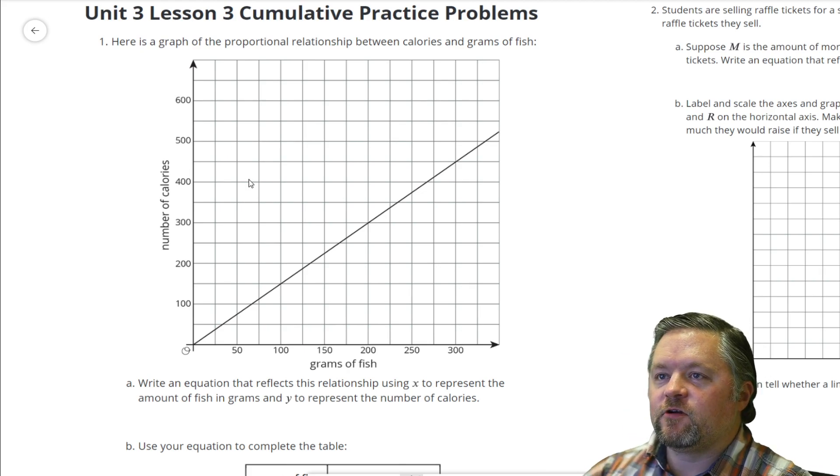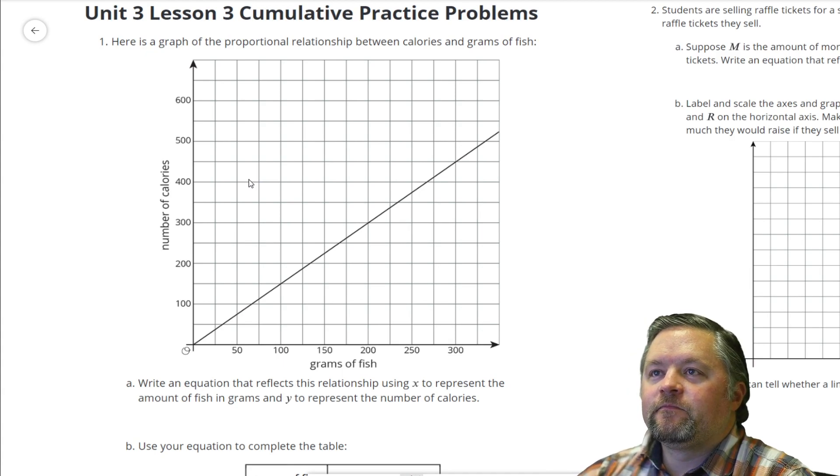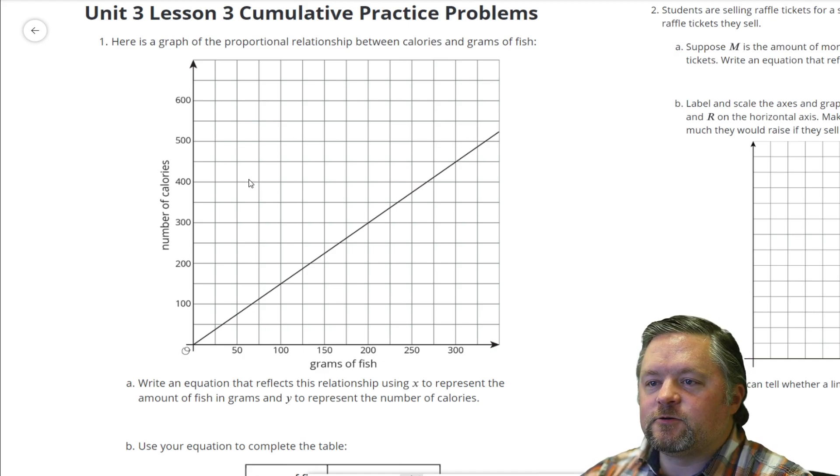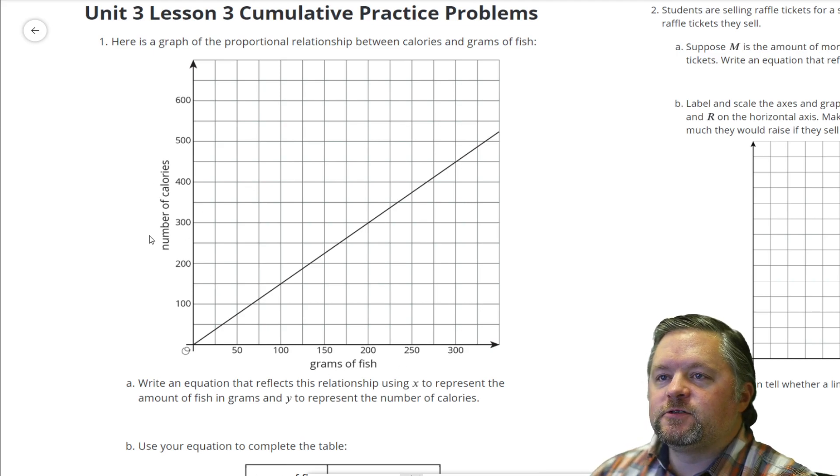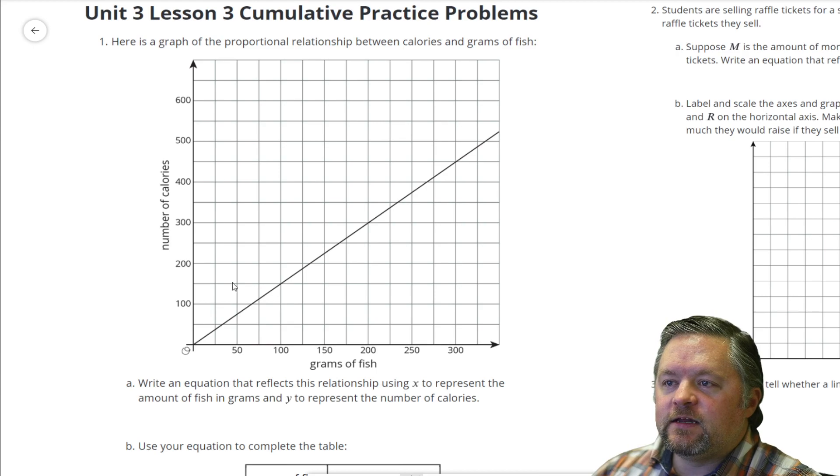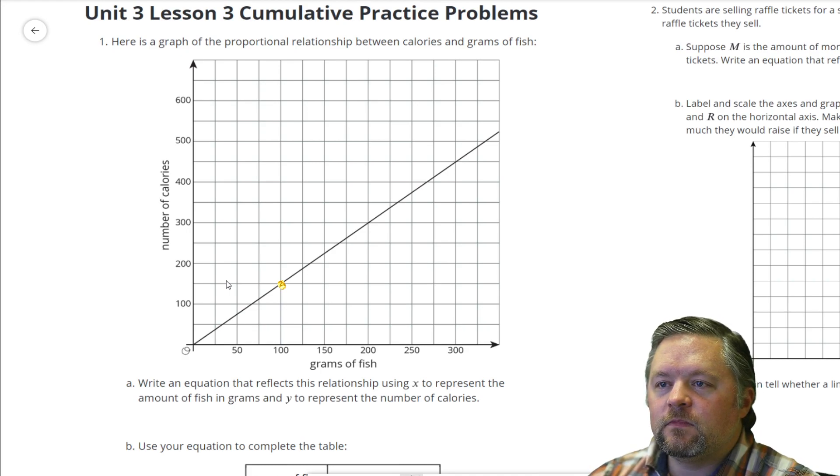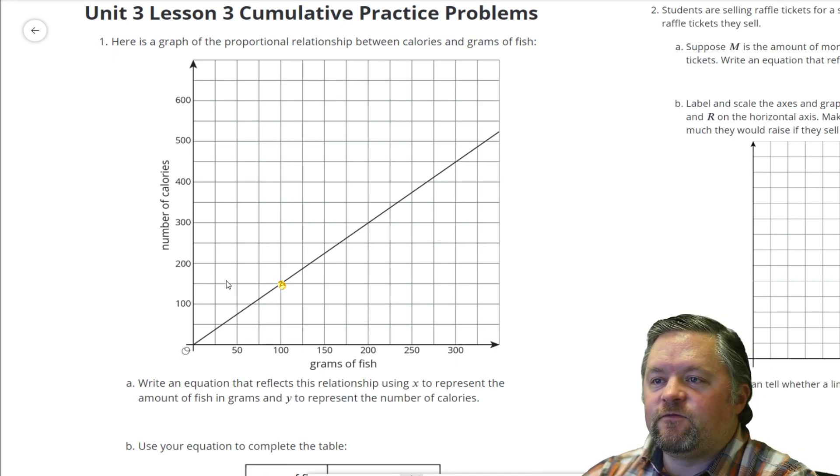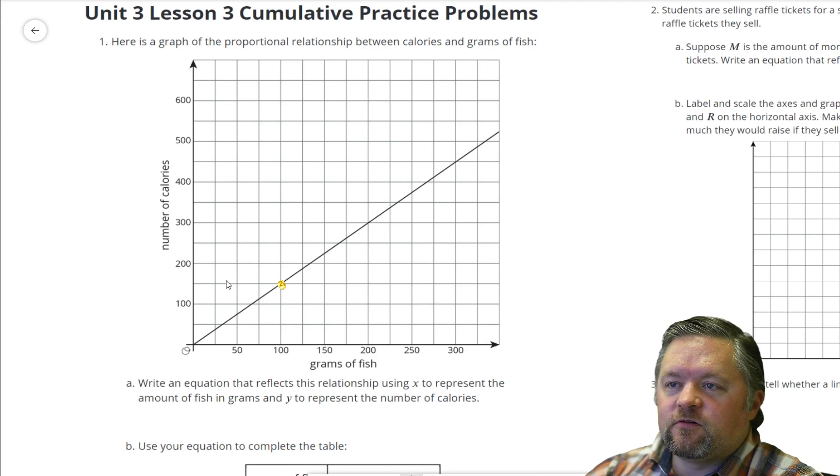At special student request, I am breaking out the rainbow-colored pen. Here's a graph of the proportional relationship between calories and grams of fish. We get a graph. Write an equation that reflects the relationship using x to represent fish in grams and y to represent number of calories. We need to find a nice point to base this on. How about this one right here? Here, because this goes through the origin, it's pretty easy. We just need to find our slope. We go through 0, 0. The rise is 150, and the run is 100.